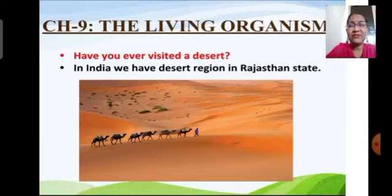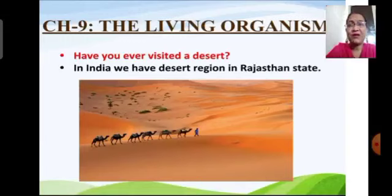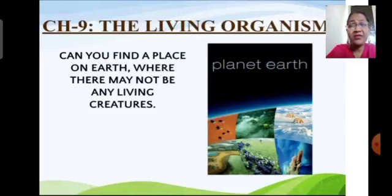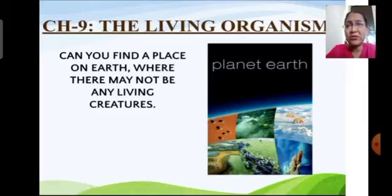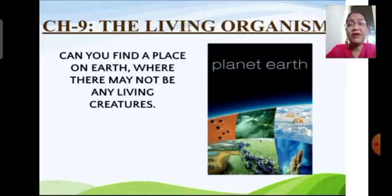While recollecting all the types of places we have visited, don't you wonder that each of them is very different from the other? Some places are very cold, some are very hot, some are very dry, and some are very humid, but each one has many kinds of living organisms. Can you find a place on Earth where there may not be any living creature? Even the tiniest germs are living creatures present everywhere. Planet Earth has millions and billions of living creatures, many known and many yet to be discovered.